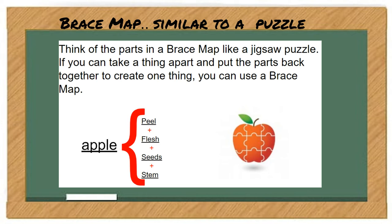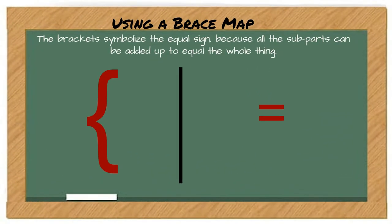You can see here, they broke apart the apple into its parts. Let's look closely at that. The brackets basically symbolize the equal sign because all of the subparts can be added up to equal the whole of the thing. For example, the apple.